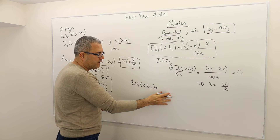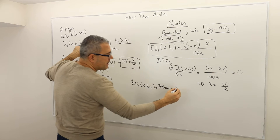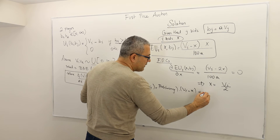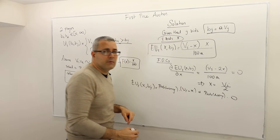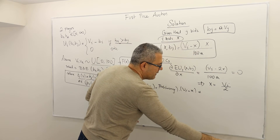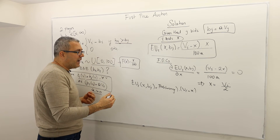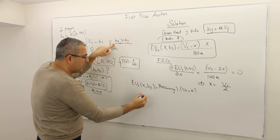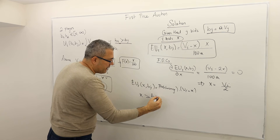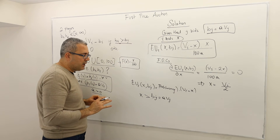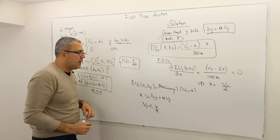I can ignore the losing term since it's multiplied by zero. What is the probability of winning? Player I wins only if his bid X is greater than or equal to his opponent's bid B_J, which equals A times V_J. That means as long as V_J is less than or equal to X divided by A, player I is going to win. But V_J is a random parameter, uniformly distributed between 0 and 100.